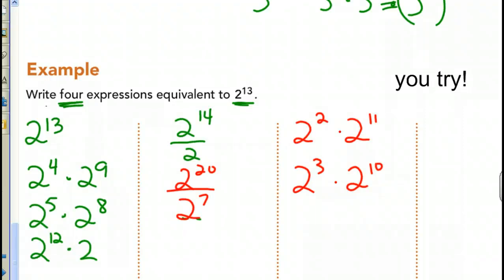Alright, here's just some examples and you might have something different. So, 2 to the 13th could be 2 to the 4th times 2 to the 9th. 2 to the 5th times 2 to the 8th. 2 to the 12th times 2. 2 to the 14th over 2. 2 to the 20th over 7. 2 to the 2 squared times 2 to the 11th. 2 cubed times 2 to the 10th. Anything like that, but you only needed 4. So, if you have a question, please ask one of us if yours is true or not.